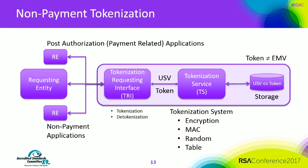For non-payment tokenization, we have slightly different terminology. In the middle is the tokenization system, composed of three components: the interface (TRI), the tokenization service itself using one of the four methods — encryption, MAC, random, or static table — and storage depending on which method or implementation. What feeds into the system are requesting entities. These are applications requesting either a token — here's a USV, give me the token — or detokenization: I have a token, I need the USV back. How does anyone know whether they're asking for tokenization or detokenization? That's part of the system, implementation, and controls you have to put in place.